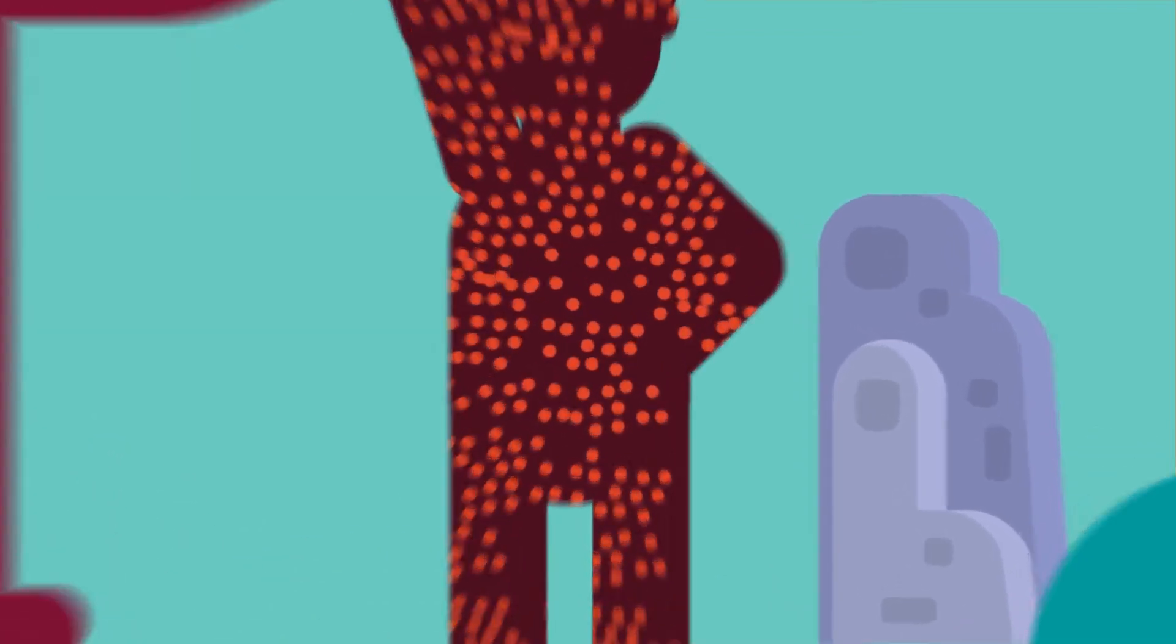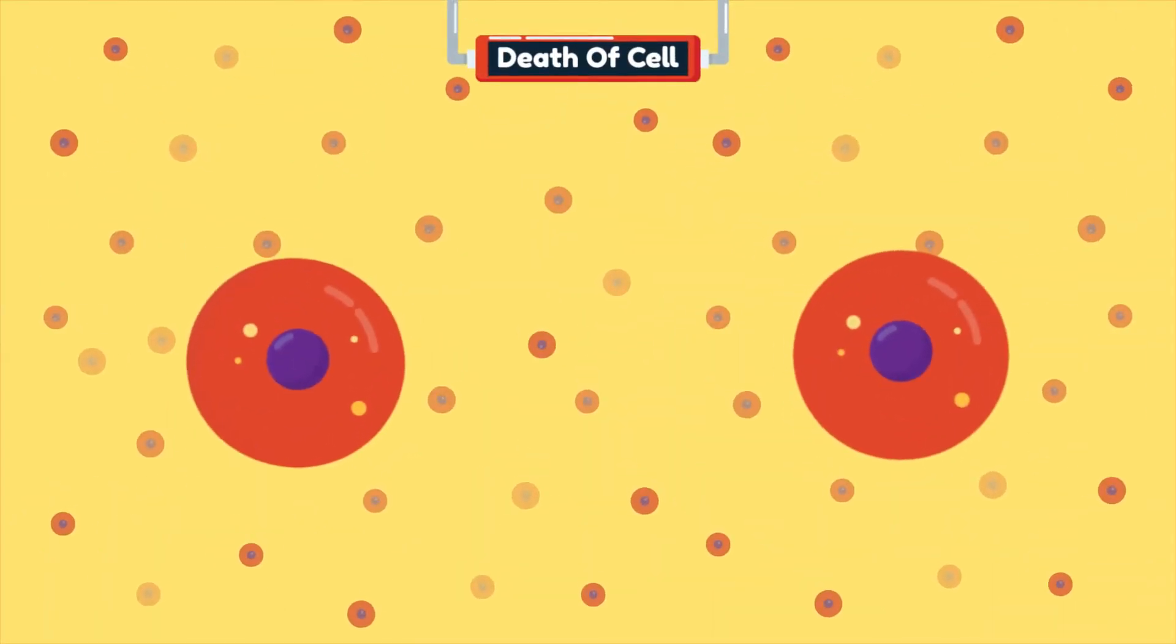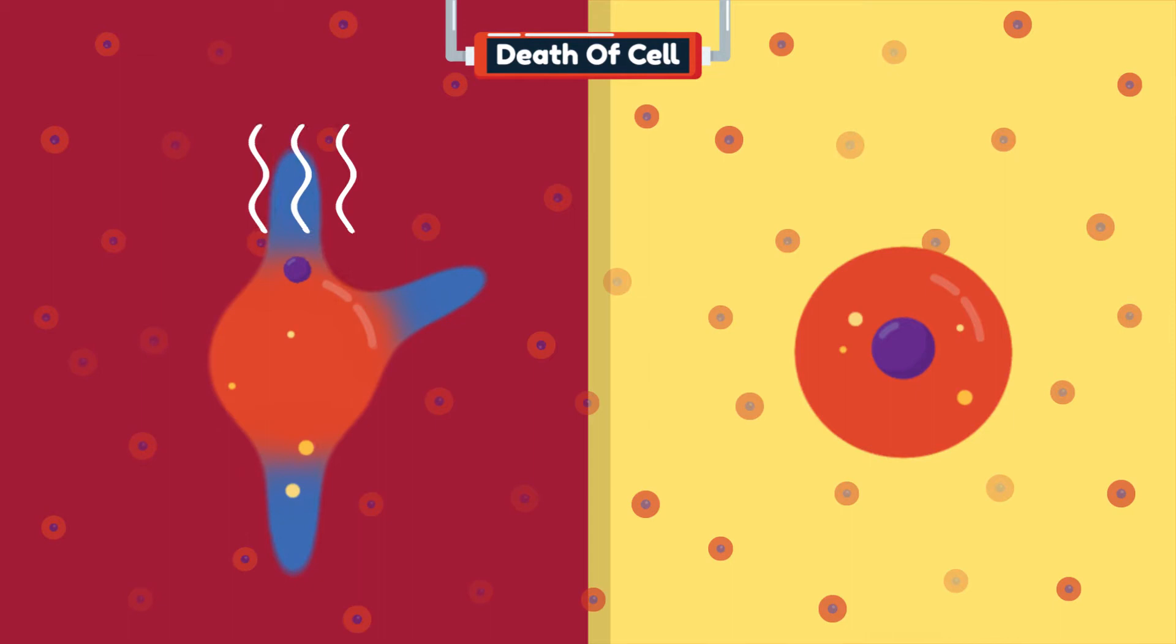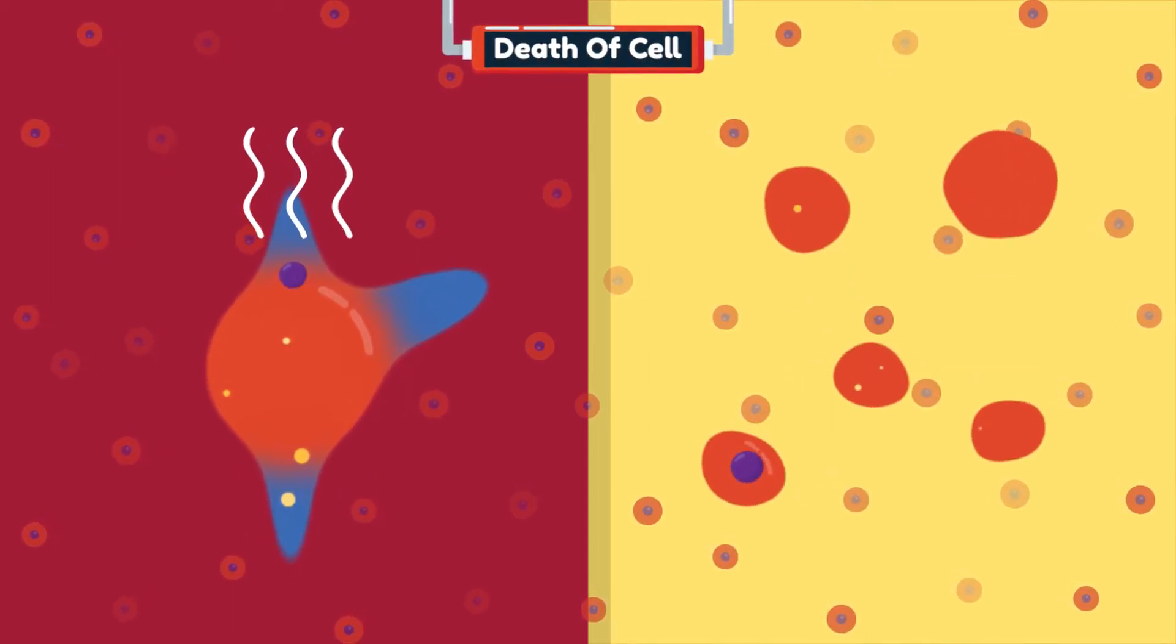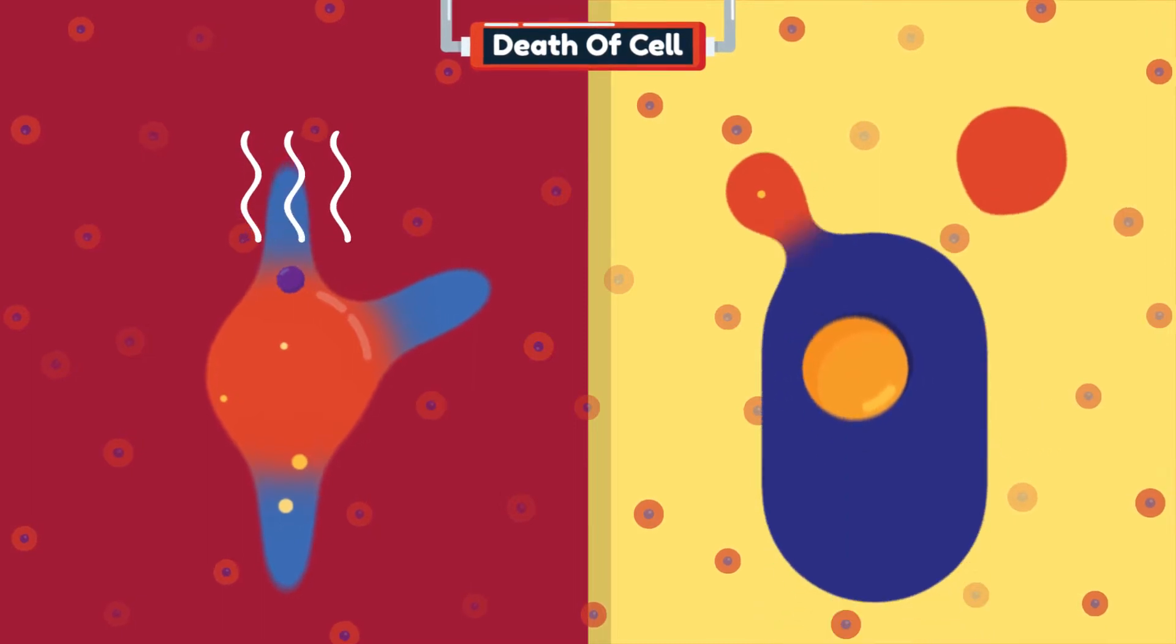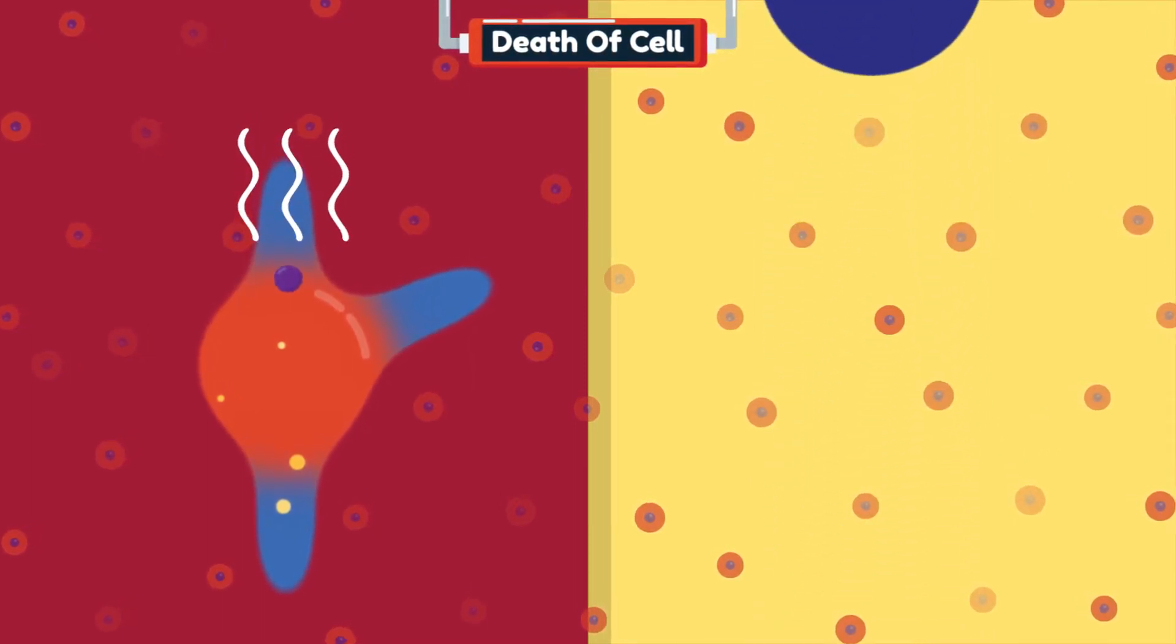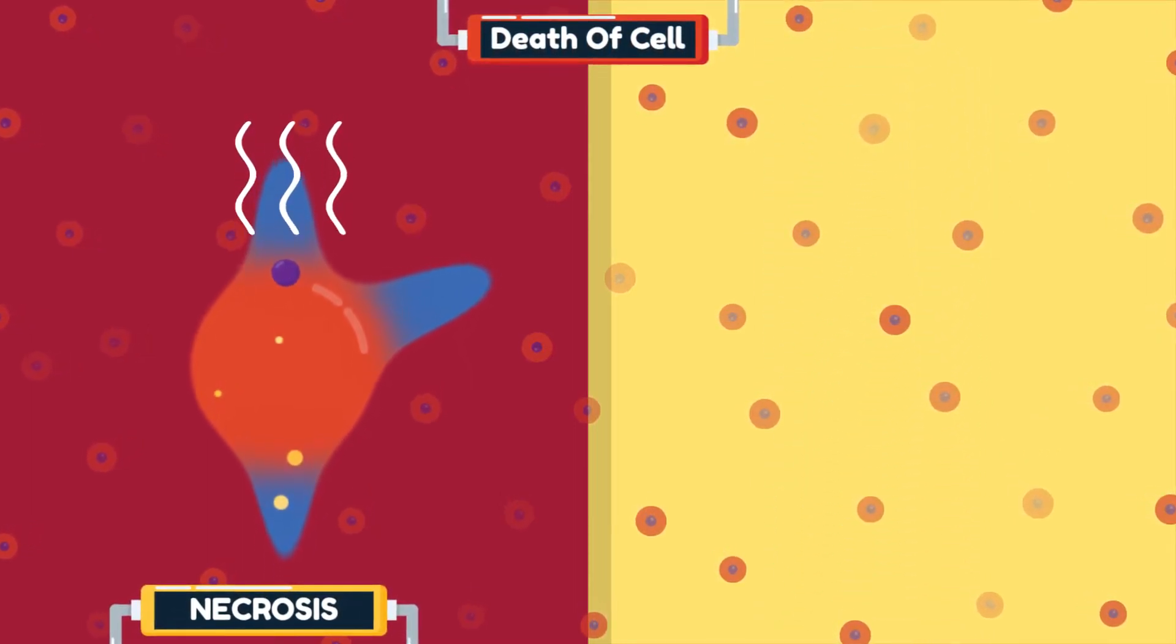There are mainly two types in which a cell undergoes death, either through exposure to harmful environment, injury, or through a pre-planned and regulated process of disintegration. Cell death occurs via two different processes, one being necrosis and the other being apoptosis.